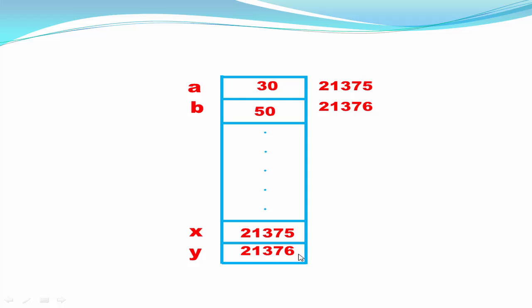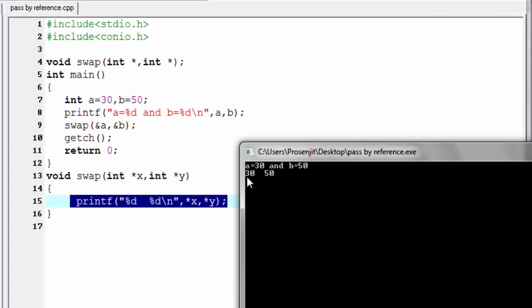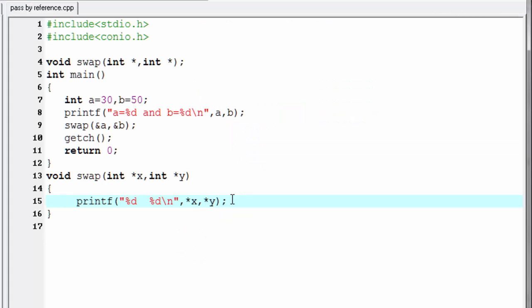When we print the value in the printf function, star x indicates the value stored in memory location 21375, which is 30, and star y indicates the value stored in memory location 21376, which is 50. That's why it prints 30 and 50.